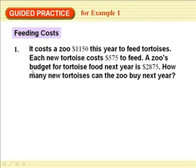So the zoo, it costs $1,150 to feed the tortoises. Each new tortoise costs $575 to feed. A zoo's budget for tortoise food next year is $2875. How many new tortoises could they buy? So following the same format, we so far spend $1,050, plus it costs $575 to feed each new tortoise. Let's use T for tortoise. And we can spend $2875. So let's solve this and see how many new tortoises we can buy.